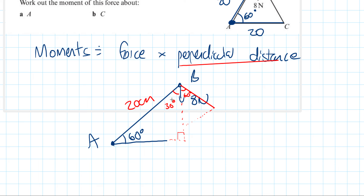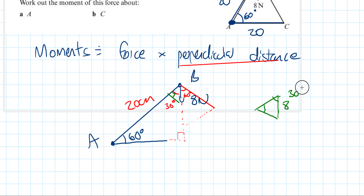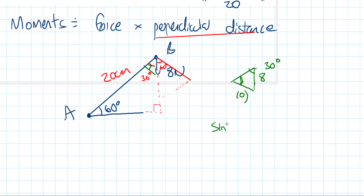We're going to use the 30 degrees approach and redraw the red line, which is the perpendicular to the surface, to make a new triangle. So this is 90 degrees, this is 8 Newtons as our hypotenuse, and this angle is 30 degrees. The side we're interested in is the one perpendicular to AB. So sin 30 = opposite over hypotenuse, which is 8, giving us 8 sin 30 = 4.